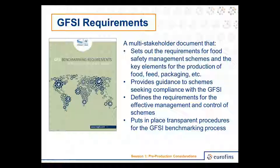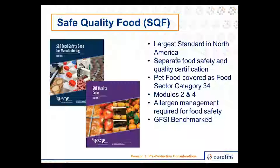Three standards that are very common in North America for the pet food industry. The first is SQF, which has a food safety standard and a quality certification standard. There's a section for the pet food industry — food sector category 34 — meaning modules 2 and 4 apply to the pet food world. Pet food facilities can get just food safety certification, or they can go all the way to quality certification. One thing to note is that allergen management is required for the food safety certification for pet food facilities.